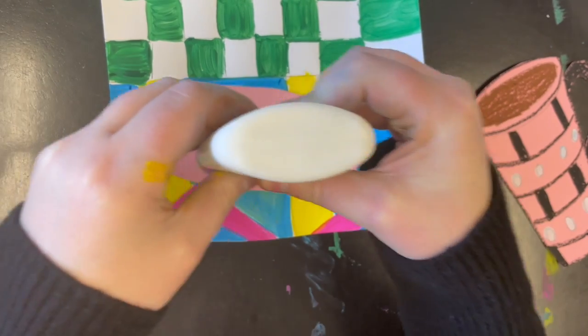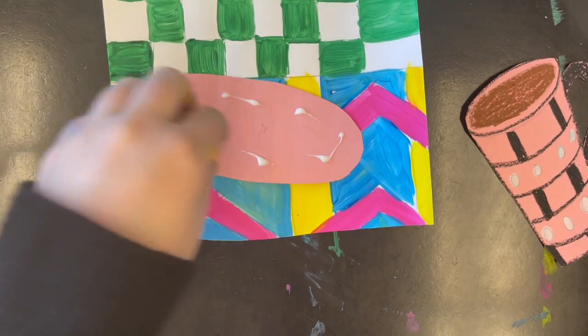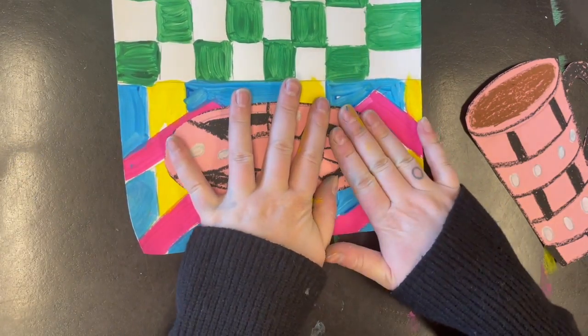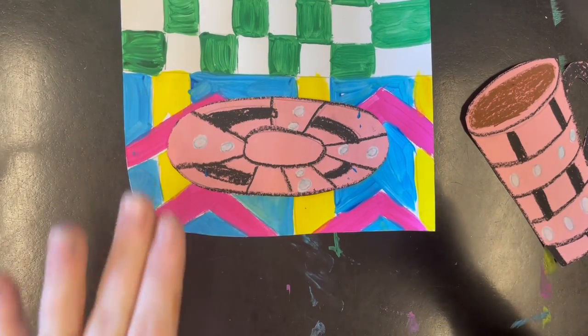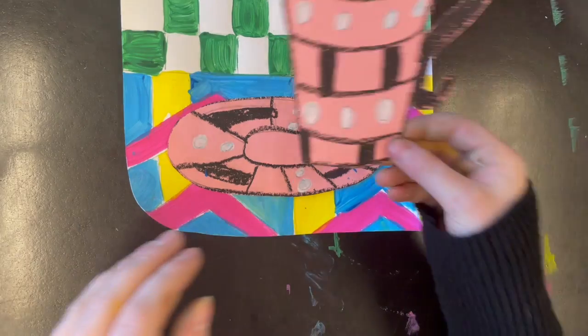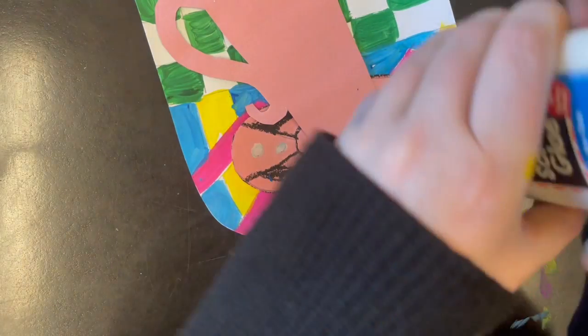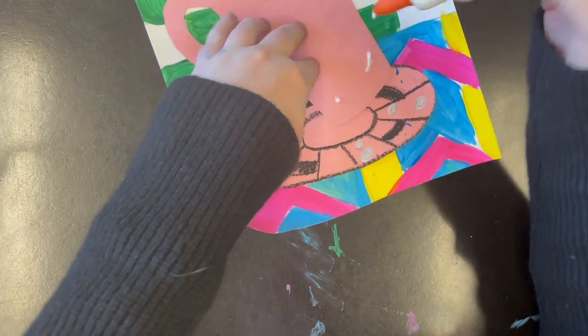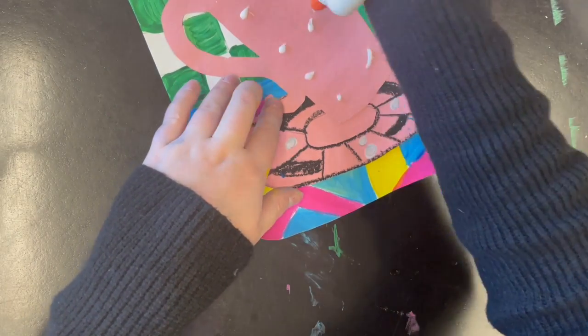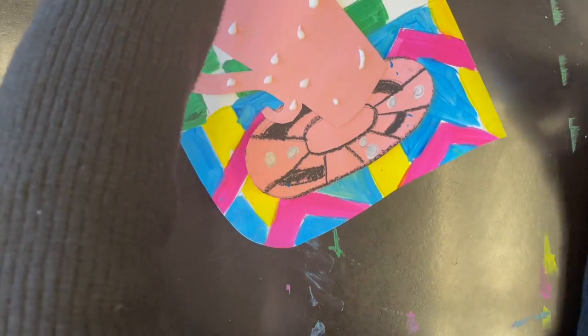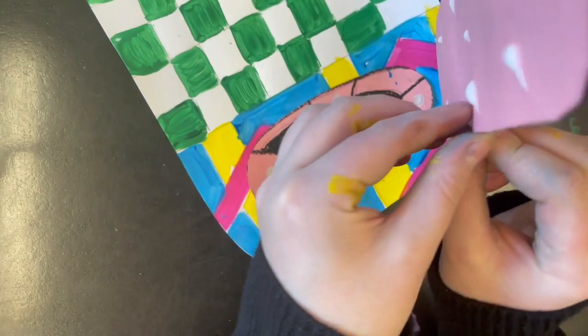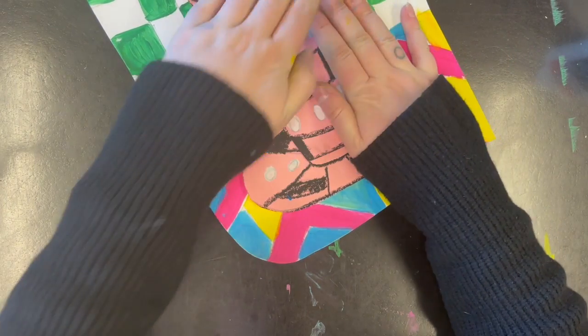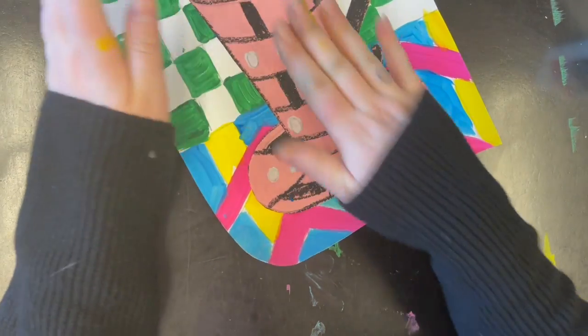I'm just using dots. The saucer needs to be on the pattern that's going to be the table, so it actually looks like it's sitting on a surface. I'm going to do the same thing with my mug—put dots of glue, and then place it so it looks like it's sitting on the saucer, pressing it down flat.